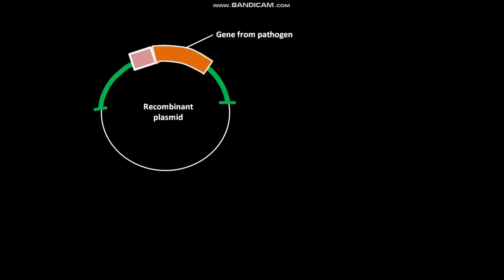Adjacent to the gene from pathogen, the vaccinia promoter sequence is present. On both sides of the gene from pathogen, TK genes are present.